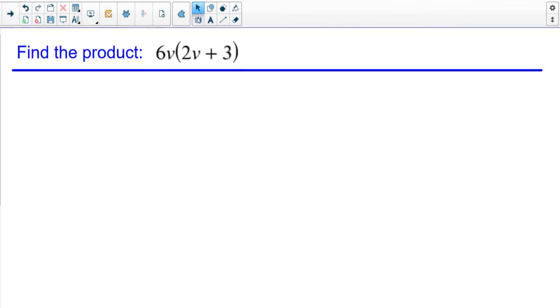The first one here says find the product of 6V times 2V plus 3. You might notice you could distribute on this one, distribute through here and through here, but I want to show you the box method on this one. So what I'm going to do is set up a box, a rectangle. It doesn't matter where you put things. I could put the 6V on the top, or I could put it here on the side.